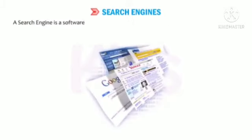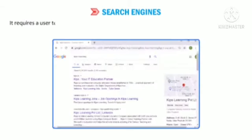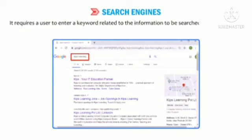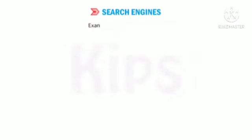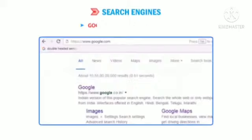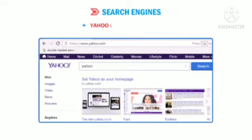A search engine is software that searches various web pages on the World Wide Web for particular information. It requires a user to enter a keyword related to the information to be searched and displays the search results as a list of links to pages on which the keywords are found. Examples of search engines are Google (www.google.com), Bing (www.bing.com), and Yahoo (www.yahoo.com).